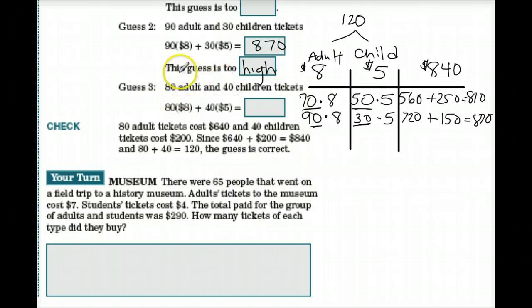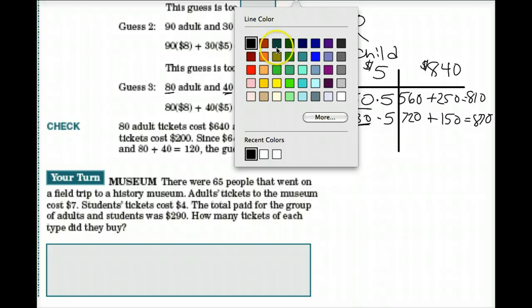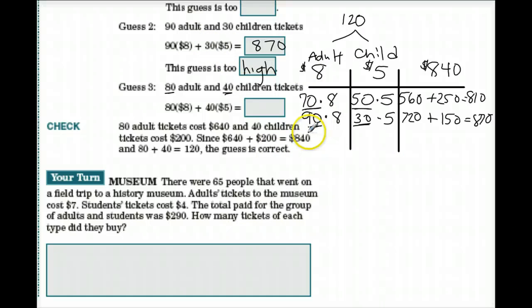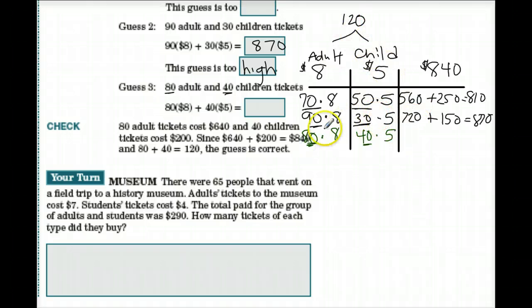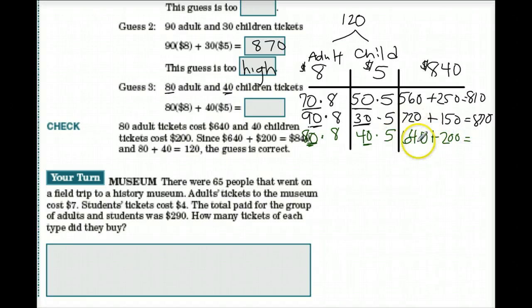Now for guess number three, we'll try 80 adult tickets and 40 children's tickets — 80 times $8 and 40 times $5. Does 80 plus 40 equal 120? Yes, it does. So 80 times 8 is 640, and 40 times 5 is 200. Does 640 plus 200 equal $840? It sure does! We've found our magic numbers.